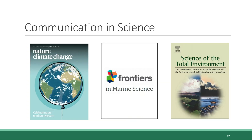Regardless of whether a scientific study is basic or applied or descriptive or hypothesis-based, there is a universal standard for how scientific knowledge gets communicated to others in the field, and that is through a process of peer review and publication in a scientific journal. These journals are collections of research on a particular subject matter. There are dozens of scientific journals that are pertinent to environmental sciences, and I have included just a small handful of them on the screen here.